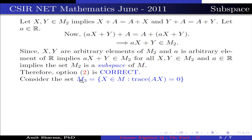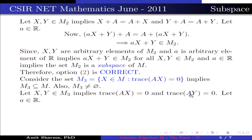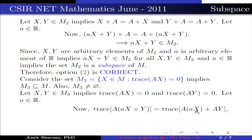Now consider the set M3 containing x belonging to M such that trace(Ax) = 0. This implies M3 is a subset of M. Also, M3 is not equal to the empty set by the same argument as M1 and M2. Let x, y belong to M3. This implies trace(Ax) = 0 and trace(Ay) = 0. Let α belong to R. Now, trace(A(αx + y)) = trace(αAx + Ay) = α·trace(Ax) + trace(Ay).